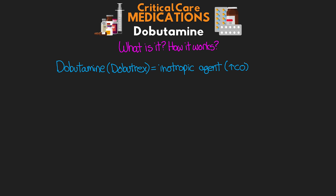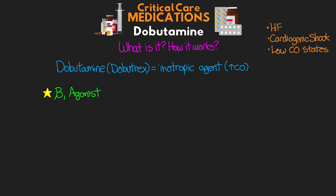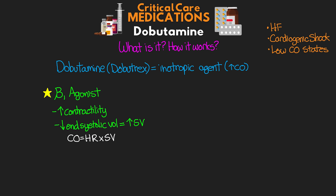Dobutamine has several different uses in those with heart failure and those in cardiogenic shock, as well as potential benefits in other low cardiac output states. Dobutamine is primarily a beta-1 agonist, which means it activates beta-1 adrenergic receptors. As a result of this activation, we're going to see increased contractility of the ventricle, leading to lower end-systolic volume, which increases stroke volume. Remembering that cardiac output equals heart rate times stroke volume, this increase in stroke volume is in turn going to increase cardiac output.